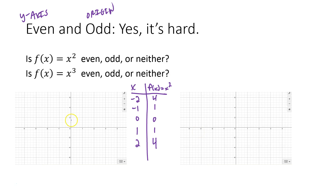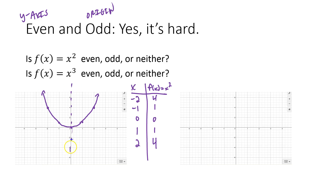I'm going to graph this — we know what it looks like. We have (1,1), (-1,1), (0,0), (2,4), and (-2,4). So we have a parabola that looks like this. And we see immediately we have y-axis symmetry — our axis of symmetry is right through the origin. This is definitely an even function. Graphing these things, it's easy to see what's going on.